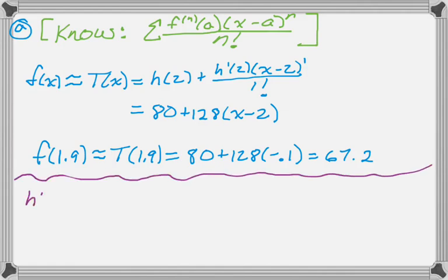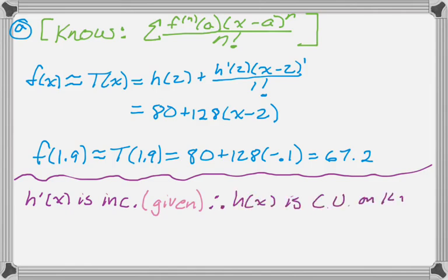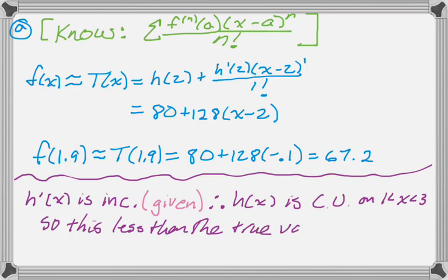And then the question is over or underestimate. Well, over or underestimate for a tangent line is almost always based on concavity. So h prime is increasing, that's given. When you read the problem, make sure you understand everything that's given to you. They tell you that all four of the derivatives are increasing on the interval. Since h prime is increasing, we know that h of x is concave up on the interval from 1 to 3. So this is going to be less than the true value, since concave up, the tangent line is below the curve. And that's part a.